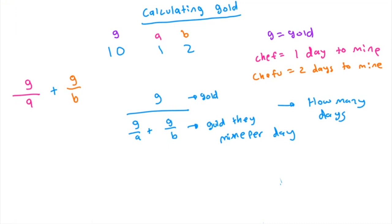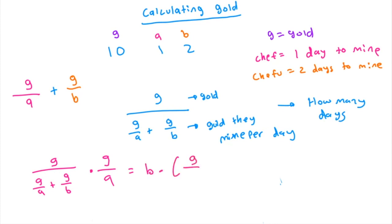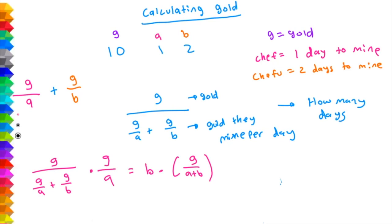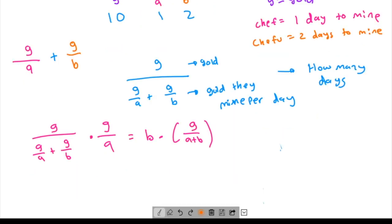By this logic, Chef will get G / (G/A + G/B) × G/A gold, which if you do the algebra simplifies down to B×G / (A+B). Similarly, Chefu gets G / (G/A + G/B) × G/B gold, which simplifies down to A×G / (A+B) if you do the algebra.